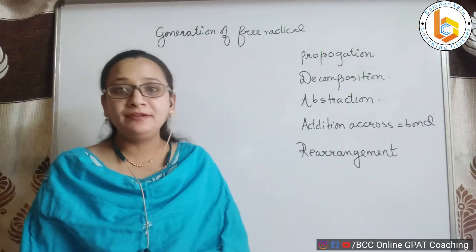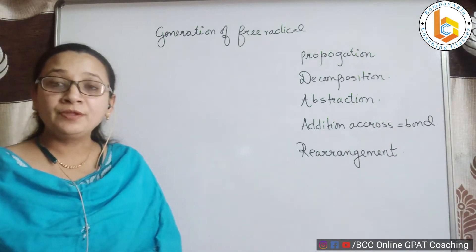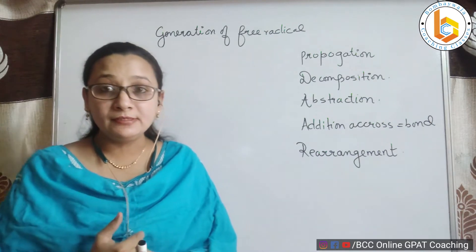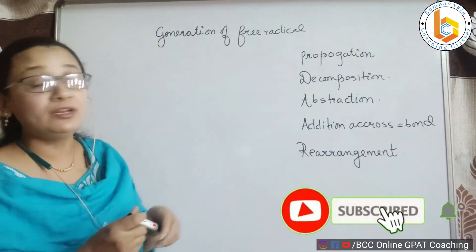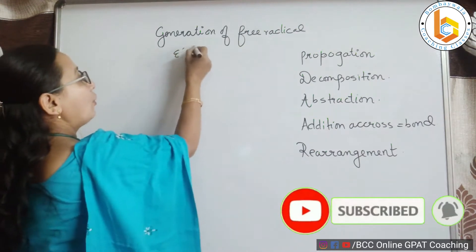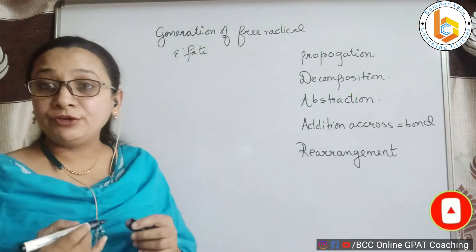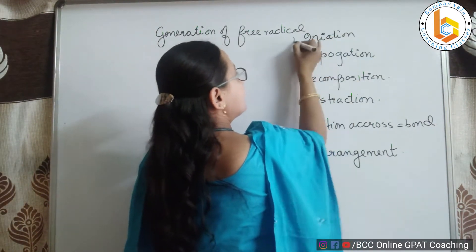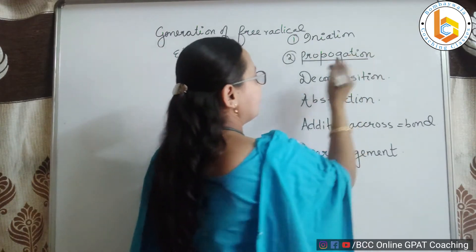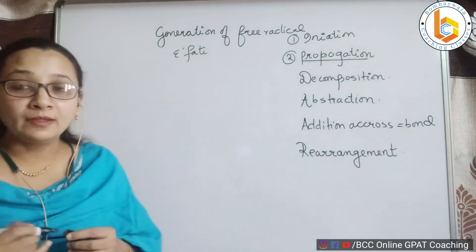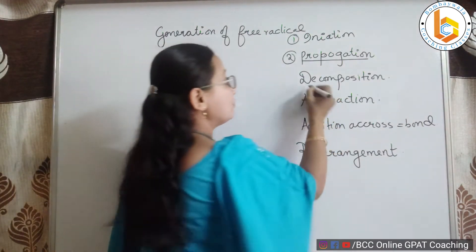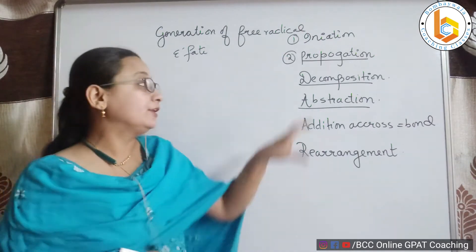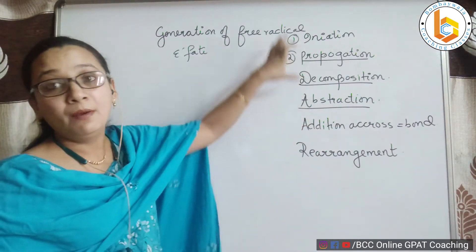Hello, my dear students. This is your guide and mentor for organic chemistry. We are talking about free radicals — specifically, the generation and fate of free radicals. In our last video we already discussed initiation. The second step of fate is propagation, which we are going to talk about in this video. We have already discussed decomposition and abstraction in the last video, and we have seen that they can be treated as part of initiation as well as propagation.